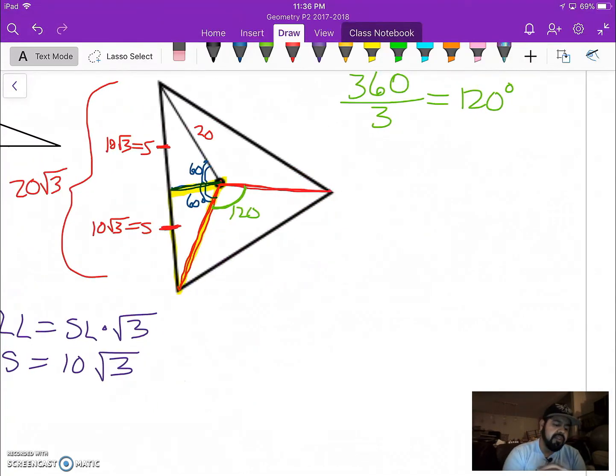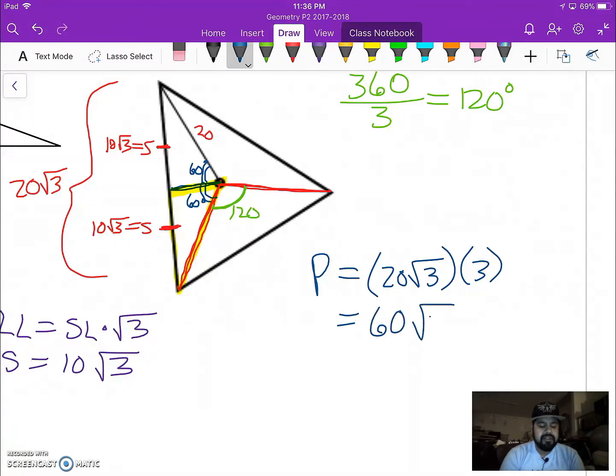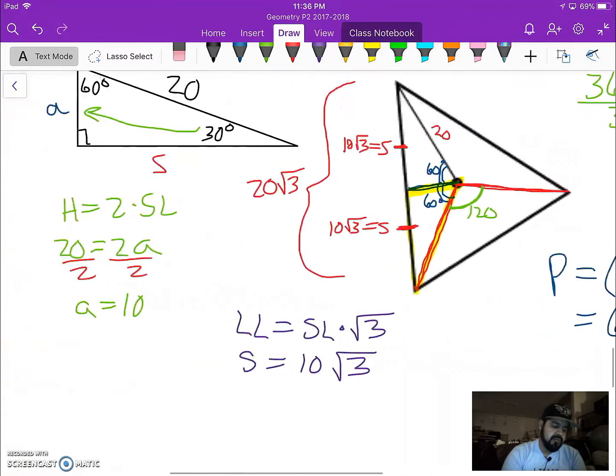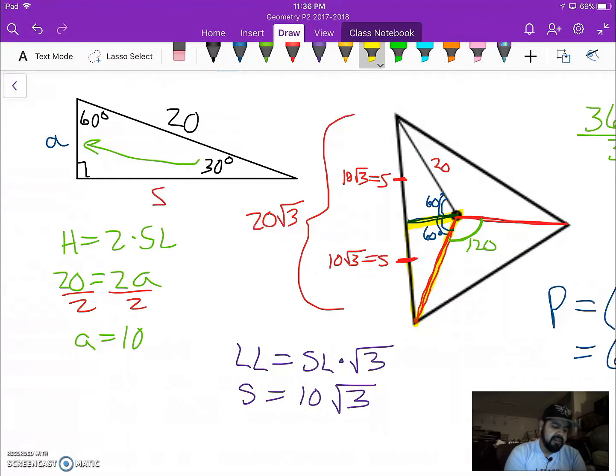Well, remember we need our perimeter. Well, the perimeter is going to equal one side length times the number of sides we have. We just found the side length. So that's 20 rad 3 times our three, which will give us 60 rad 3. We have our perimeter. We found our apothem from earlier. Which, let's use a blue highlighter. There's my apothem, which represents that length. We're good to go.